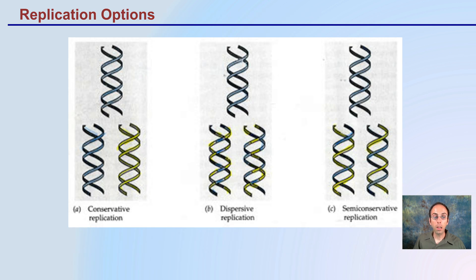Looking at the replication options again: in semi-conservative replication, you have one dark strand and one new strand. In disruptive replication, there would be all different pieces. In conservative replication, the dark original strand would stay the same and only new strands would be produced alongside it.